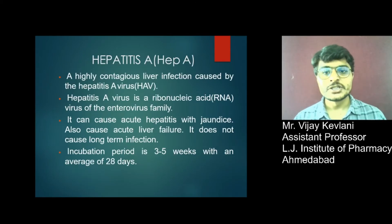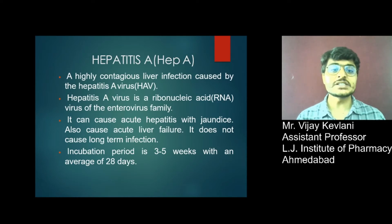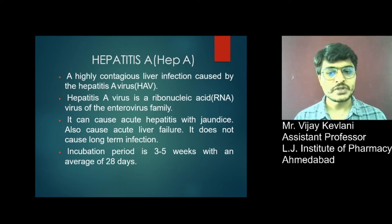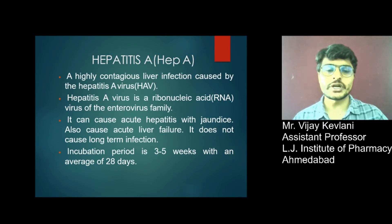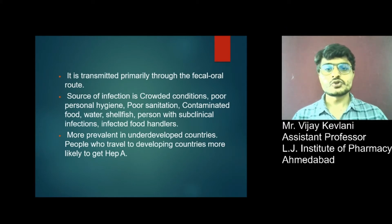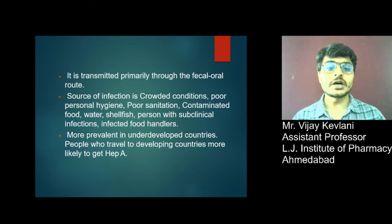Hepatitis A is a highly contagious liver infection caused by the Hepatitis A virus, which is an RNA virus of the enterovirus family. It can cause acute hepatitis and acute liver failure but does not cause long-term infection. The incubation period is 3 to 5 weeks, with an average of 28 days. It is transmitted primarily through the fecal-oral route. Sources of infection include crowded conditions, poor personal hygiene, poor sanitization, contaminated food and water, and infected food handlers. It is more prevalent in underdeveloped countries.